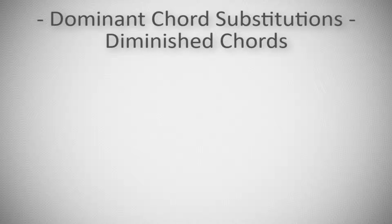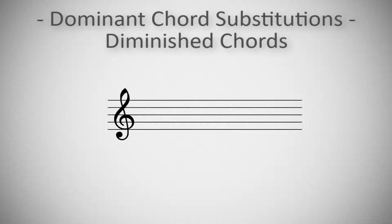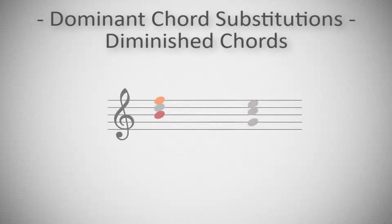The most direct diatonic substitution of the dominant chord is the diminished chord. For example, replacing a G7 with a B diminished still shares the common tones B, D and F, maintaining the presence of the tritone.